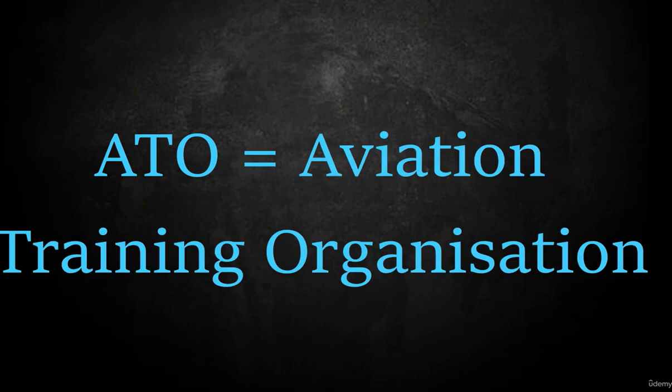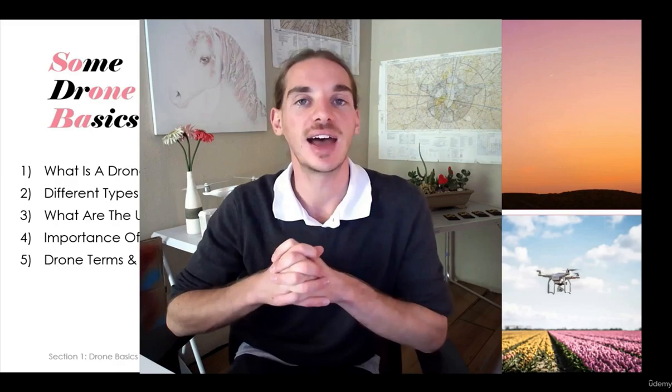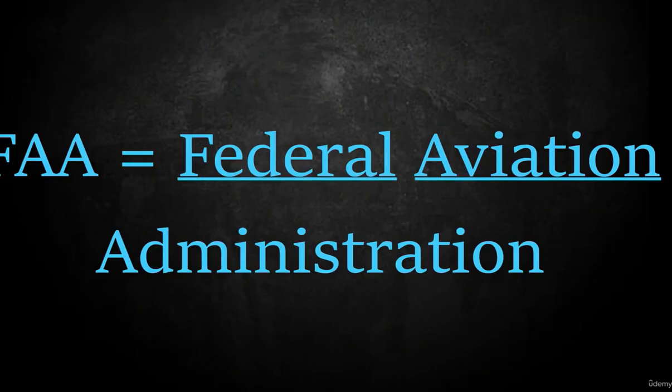ATO stands for aviation training organization — the fancy term for an aviation school, whether manned or unmanned. CAA stands for Civil Aviation Authority — the body that controls the regulations of air law within a country. For example, here in South Africa we have the SACAA, the South African Civil Aviation Authority. CAAs are scattered all around the world. If you're not under a CAA, you will be under the FAA — the Federal Aviation Administration.